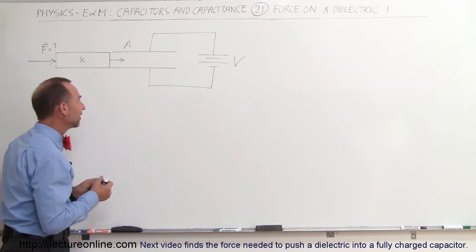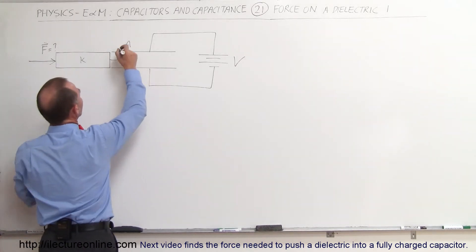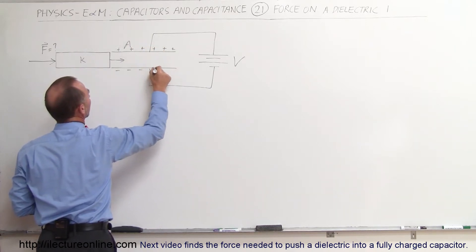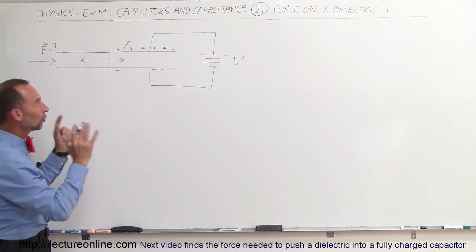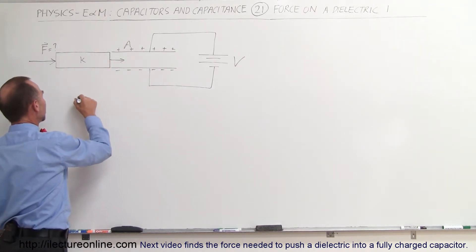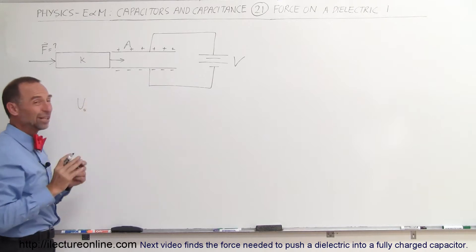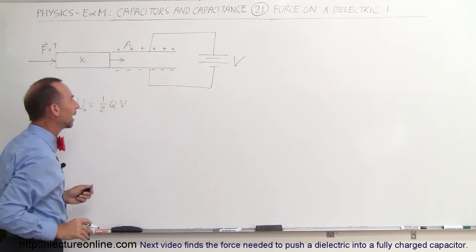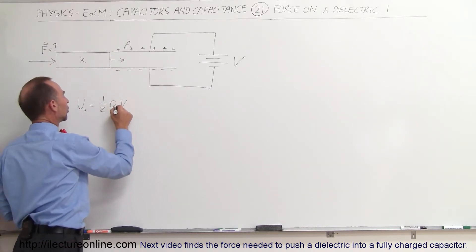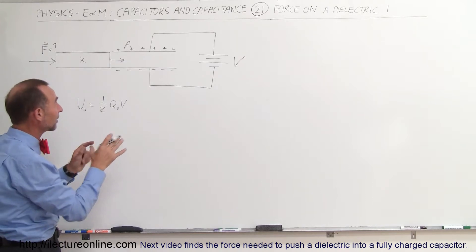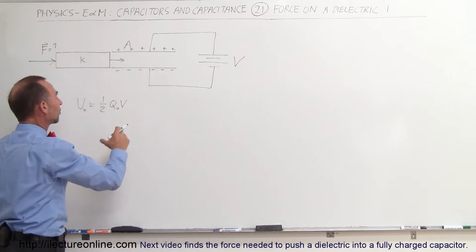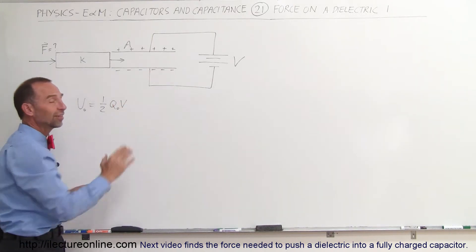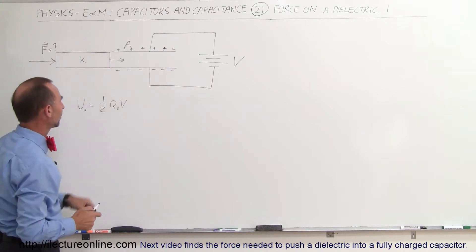Before we put the dielectric in there, we know we're going to have some charge on the capacitor. The energy stored in the capacitor before the dielectric is in there — let's call it U initial — is equal to one-half times the charge times the voltage. We'll call it Q initial, because once we put the dielectric in, the battery will drive additional charge onto the capacitor, increasing the energy stored, but the potential V will remain the same across the capacitor plates.